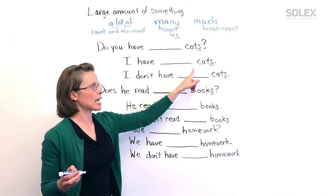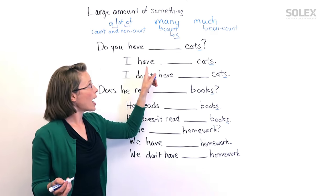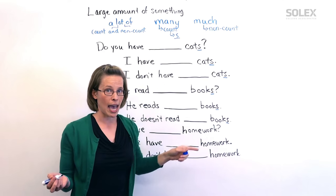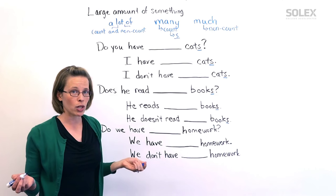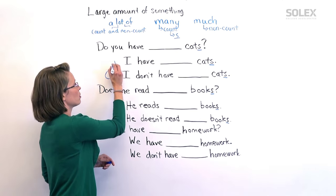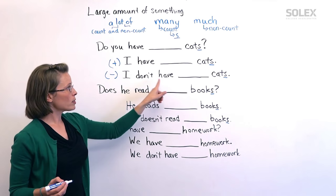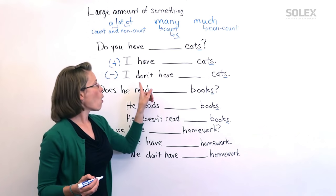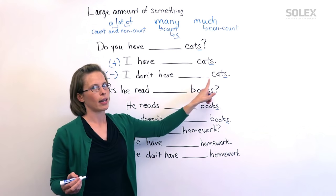Yes, I have many cats. Or, I have a lot of cats. Both are absolutely correct. Same when we have something negative. I don't have many cats. Or, I don't have a lot of cats.